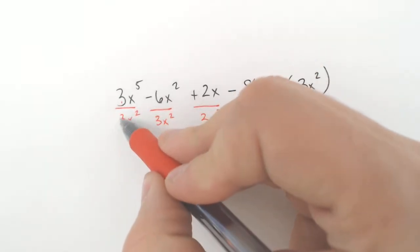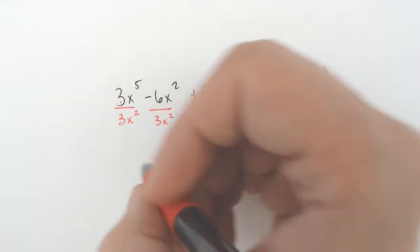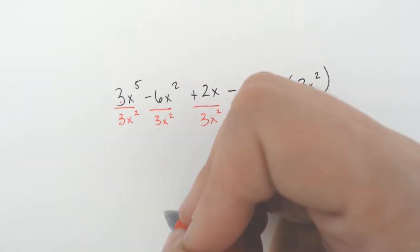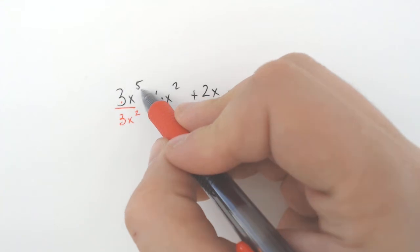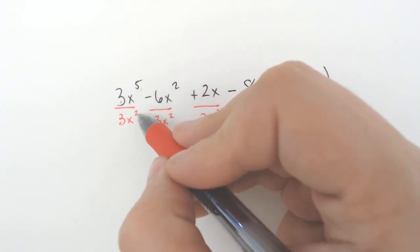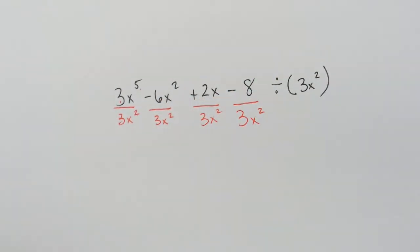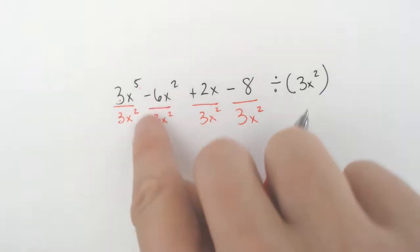So 3 divided by 3, that's 1. You can write 1 if you want to. I don't really like writing the number 1 if I can avoid it. Then you subtract 5 and 2, or I like thinking of it as find the difference between 5 and 2.